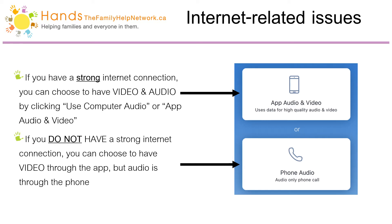For internet-related issues, if you have a strong internet connection, you can choose to do video and audio through the BlueJeans app by clicking Use Computer Audio. If you do not have a strong internet connection, you can choose to do video through the app but click Use Phone Audio for sound.